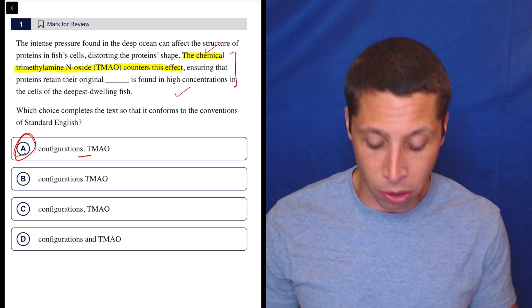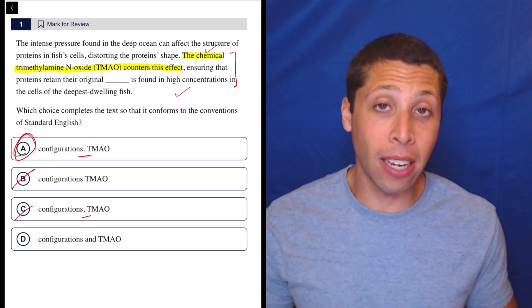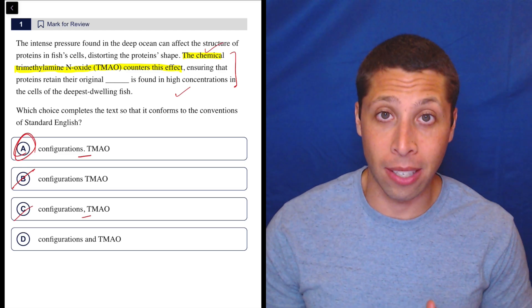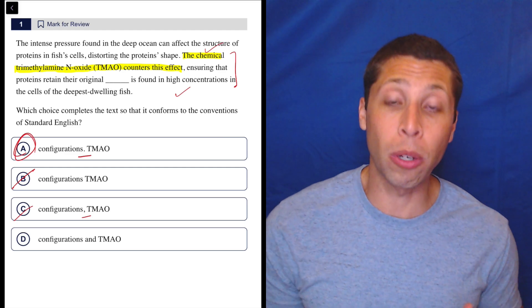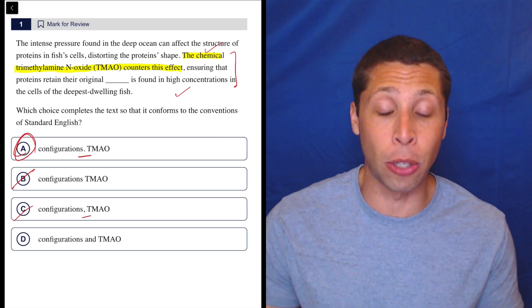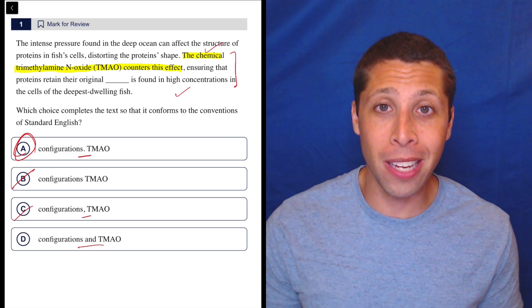So why are the other choices wrong? Well, we definitely need some sort of punctuation. The comma by itself is not strong enough to join two sentences. We can use it to join a clause to a sentence, but to join two complete sentences is not good enough by itself. It needs the help of a conjunction like 'and.' But notice that's the problem with D.